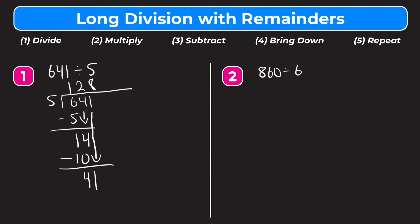So now we have 5 into 41. How many whole groups of 5 can fit into 41? That's going to be 8. 8 times 5 is 40. Step 3 is subtract: 41 minus 40 equals 1. Step 4 is bring down, but we've gone all the way to the right in our dividend, so we can't bring any more numbers down. We're left with a 1, and that 1 is going to be our remainder — we write that as R1.